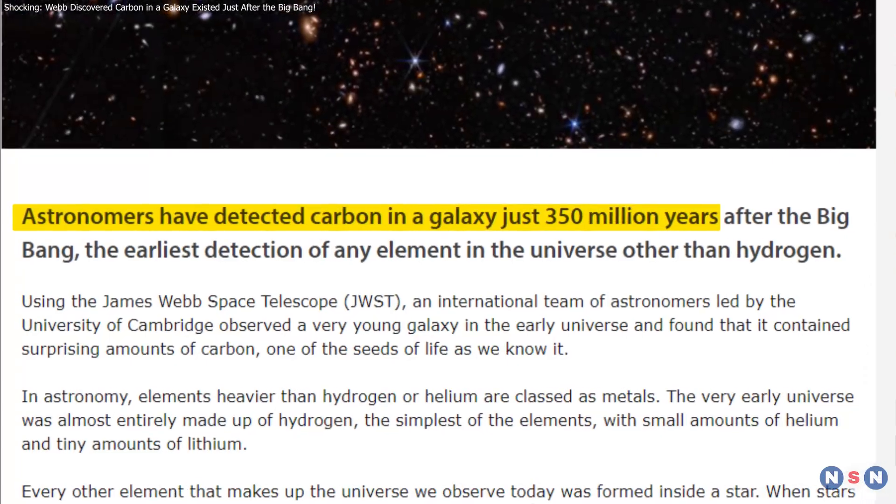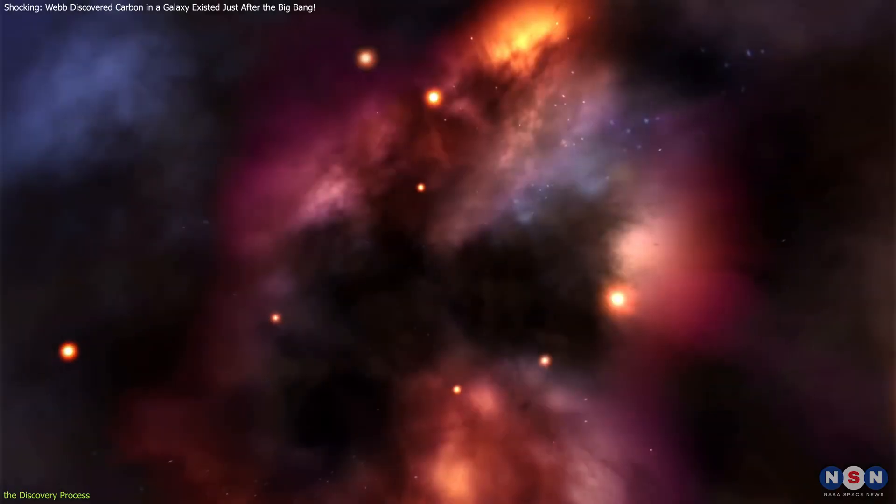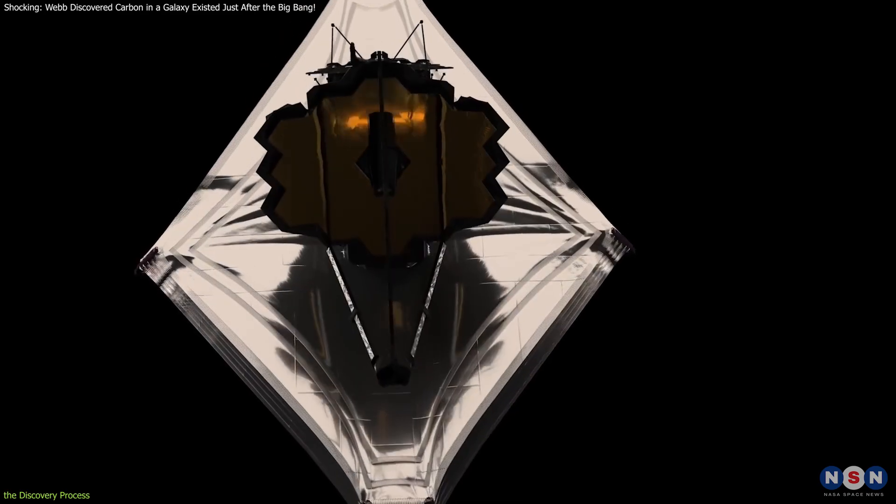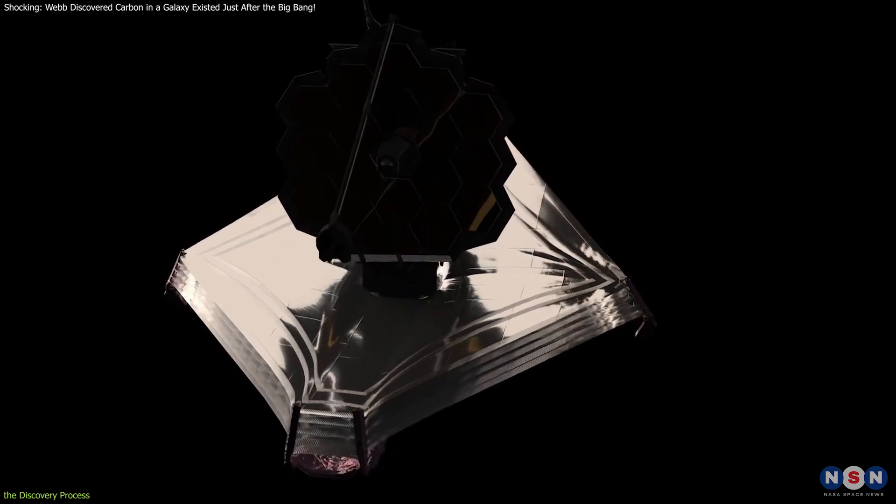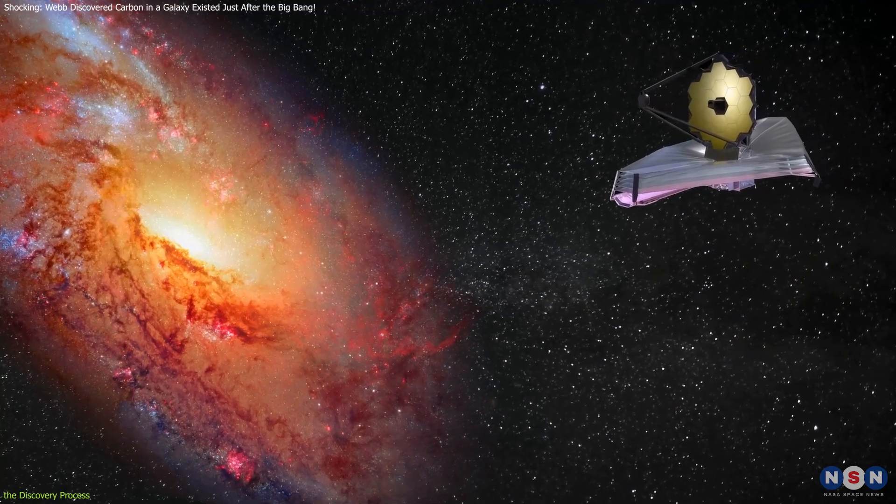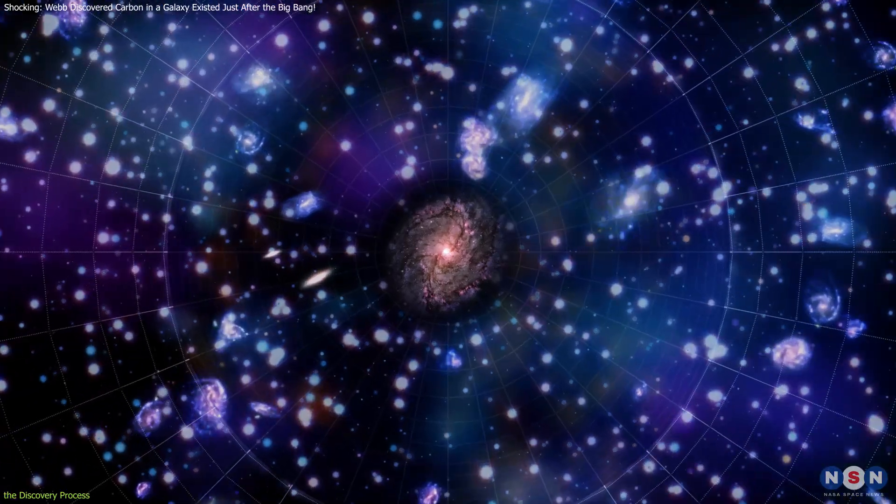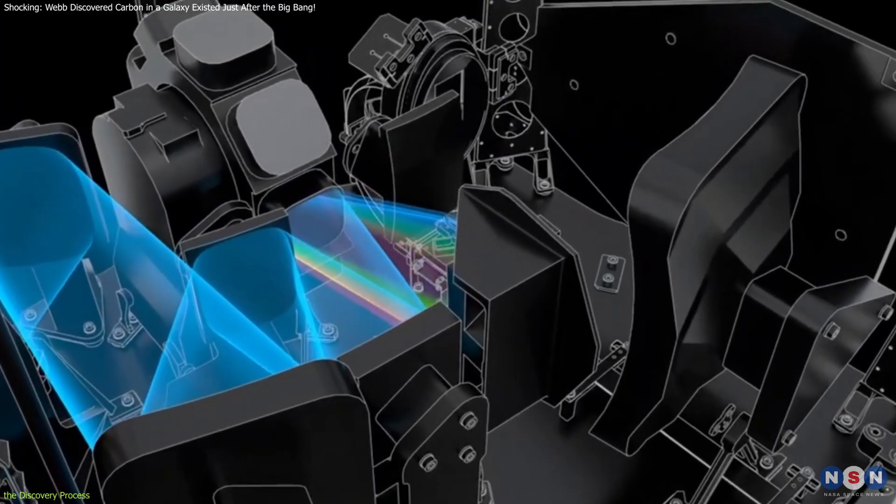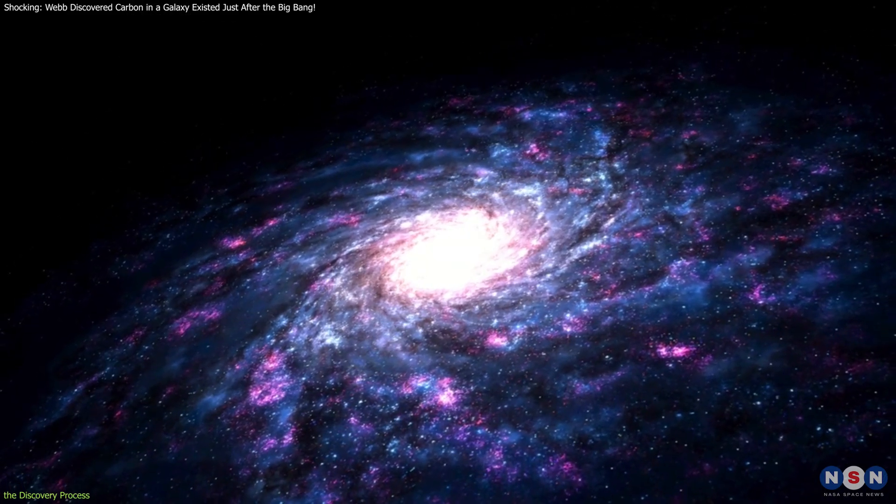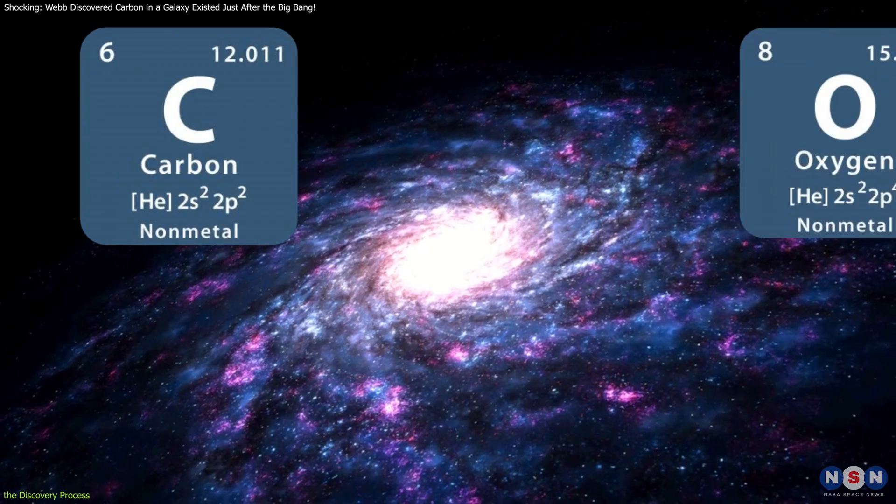The discovery of carbon in the early universe by the James Webb Space Telescope (JWST) marks a significant milestone in our understanding of elemental formation. This breakthrough was achieved by utilizing Webb's near-infrared spectrograph to analyze light from a distant galaxy named GSZ-12, which appeared just 350 million years after the Big Bang. This galaxy's light was meticulously broken down into a spectrum, revealing a rich chemical composition that notably includes substantial amounts of carbon alongside oxygen and neon.